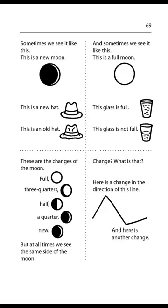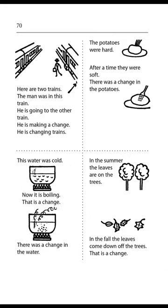Change? What is that? Here is a change in the direction of this line, and here is another change. Page 70. The man was in one train and is going to the other. He is making a change. He is changing trains. The potatoes were hard; after a time they were soft. There was a change in the potatoes. This water was cold, now it is boiling. That is a change. In the summer, the leaves are on the trees; in the fall, the leaves come down off the trees. That is a change.